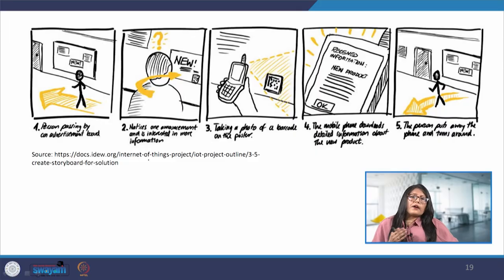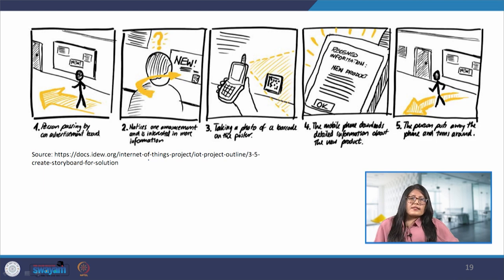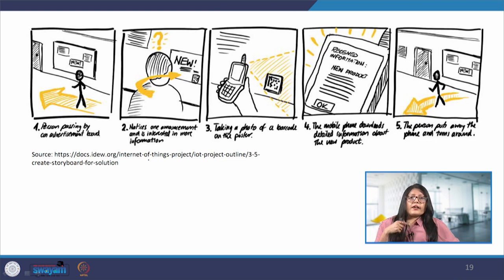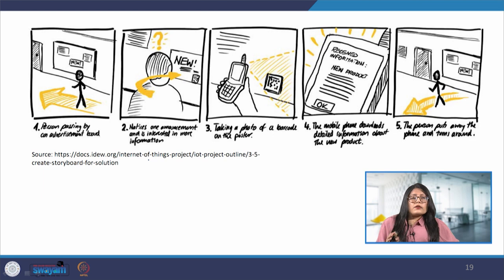By understanding current behavior, designers can explore the constraints, context, limitations and facilitators that shape the user's actions. In this example, we can see how when technology is integrated with user behavior, the user will not be required to stop and look at a picture or poster for long, but can now connect with it through the web and read it while carrying on with his life.